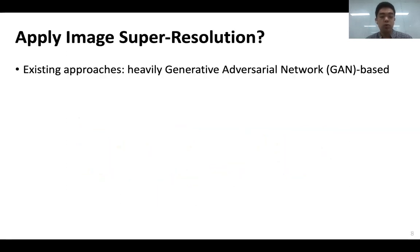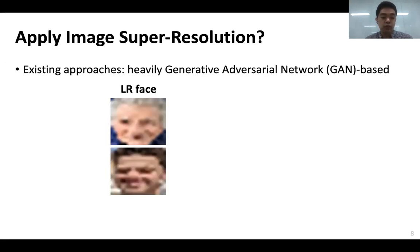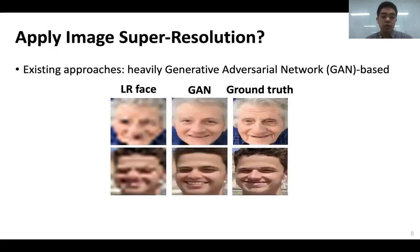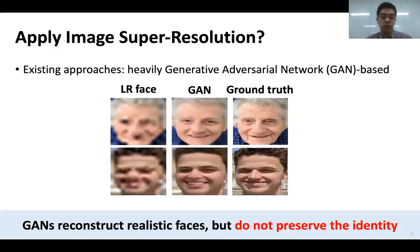Some of you familiar with computer vision might think: why not apply image super-resolution to enhance accuracy? That is possible, but state-of-the-art approaches are mostly GAN-based and focus on making reconstructed faces look realistic at the cost of distorting facial features. For example, a state-of-the-art GAN reconstructs a low-resolution face of an old woman as a young man. This behavior does not help enhance recognition accuracy. In summary, GANs make realistic faces but fail to preserve identity.